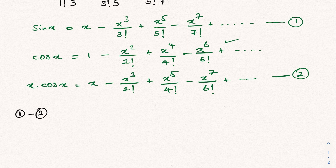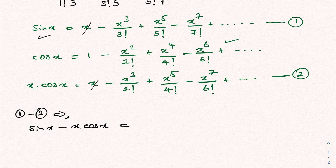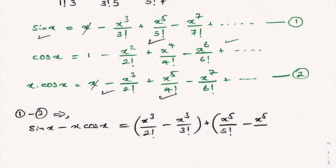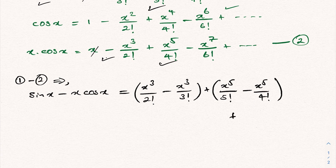Now we subtract equation 2 from equation 1. So sin(x) minus x·cos(x) equals... the x terms cancel, then minus minus gives plus, so we get x³ over 2! minus x³ over 3!, then plus x⁵ over 5! minus x⁵ over 4!, and continuing the pattern.